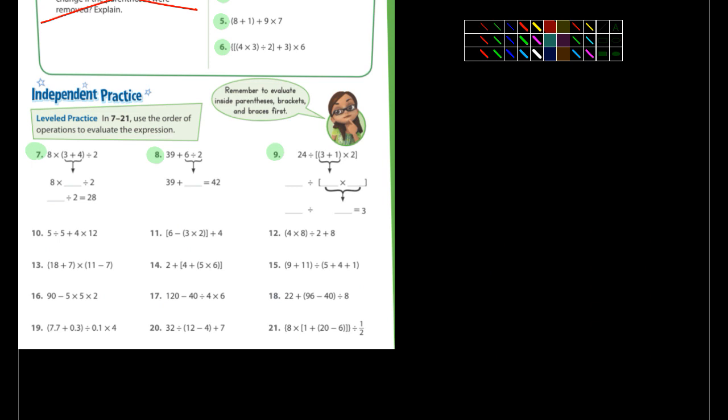This would be 24, because you're just pulling the 24 down. What's 3 + 1? That's 4. So this 4 right here, what's it being multiplied by? 2. And I think you can figure out the rest.